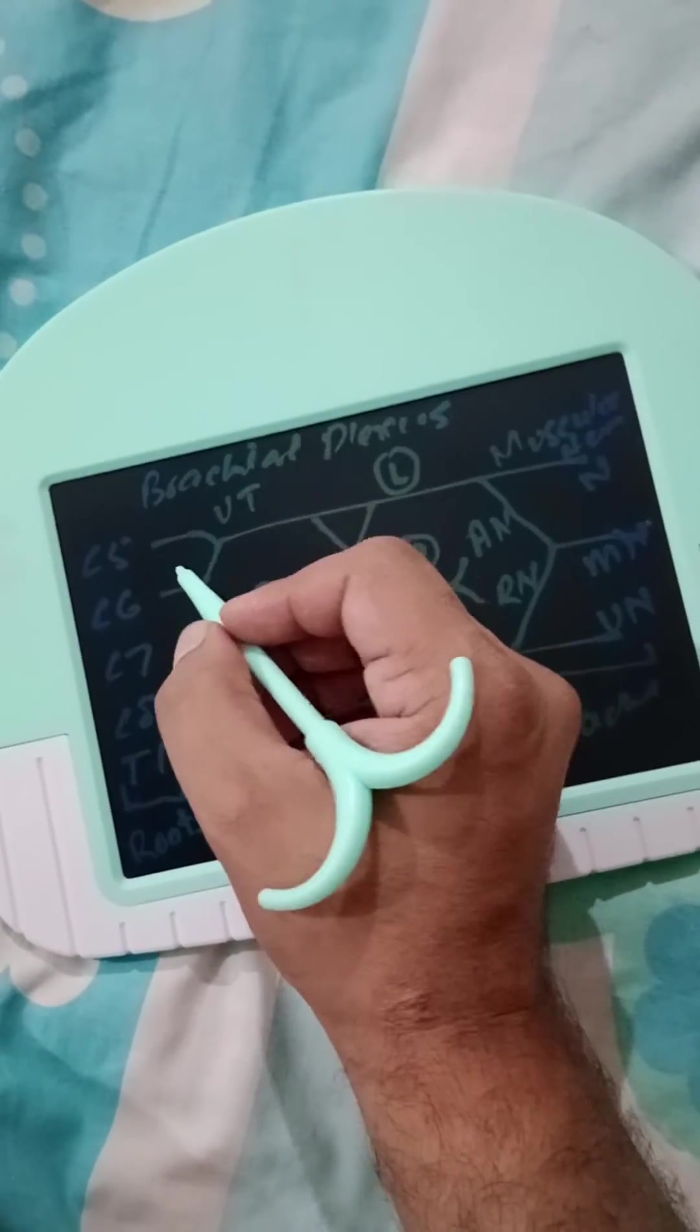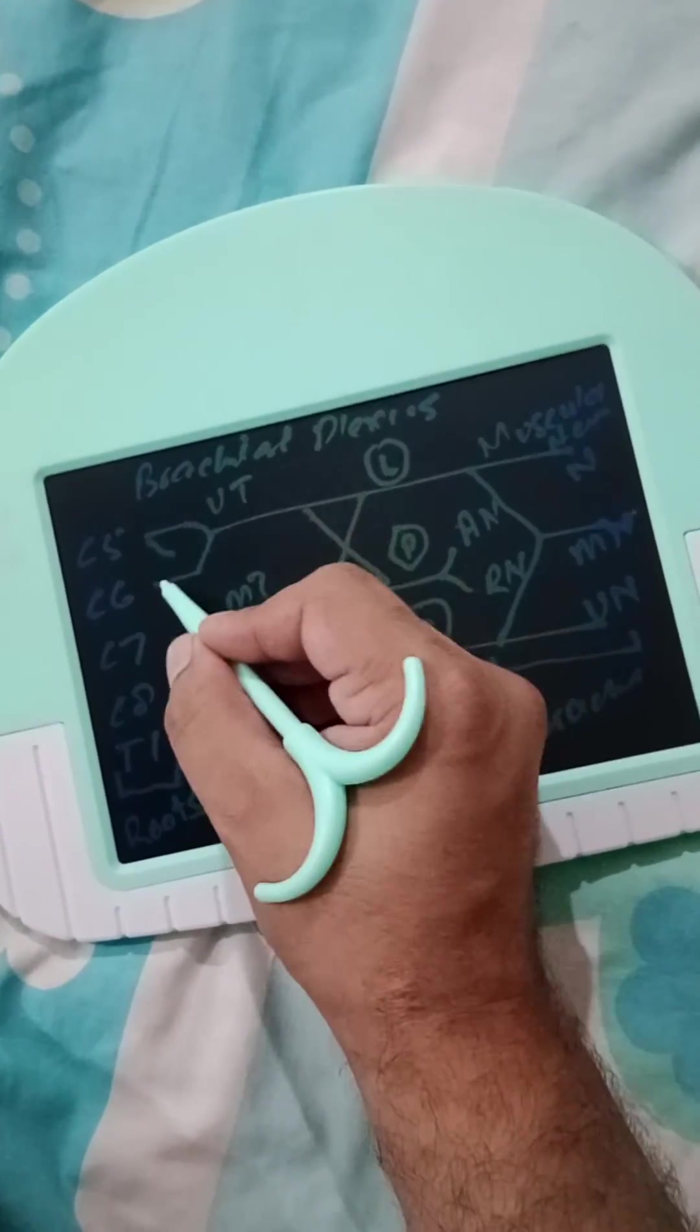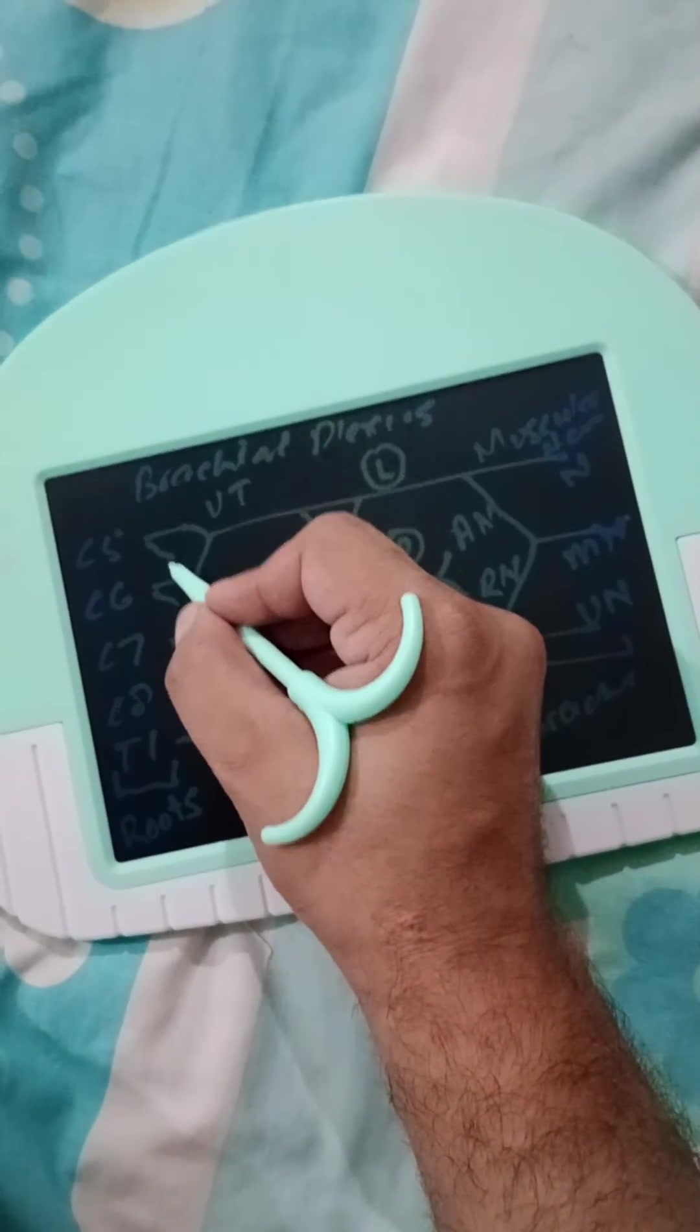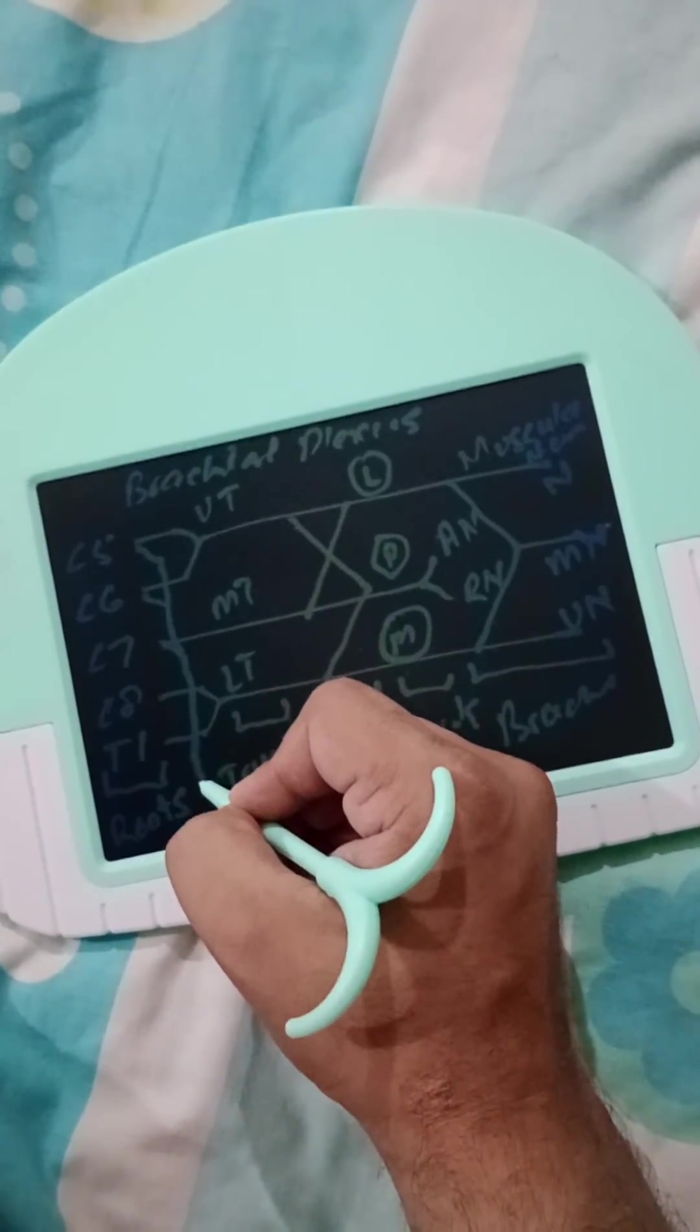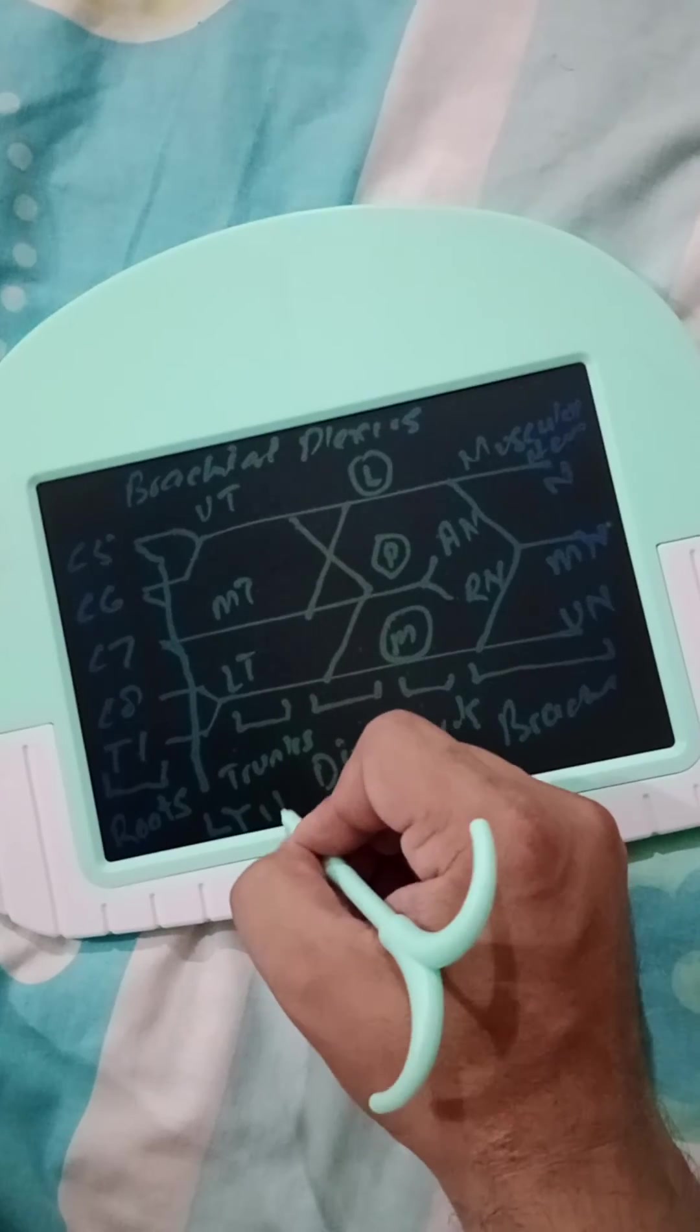And from roots of C5, C6, and C7 join together to form long thoracic nerve.